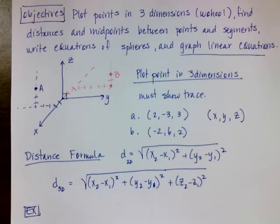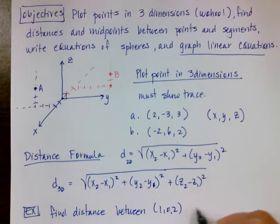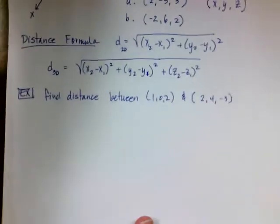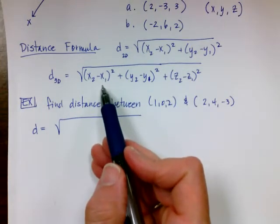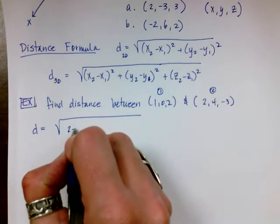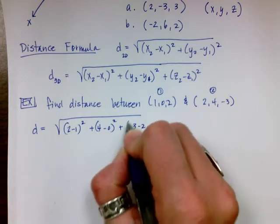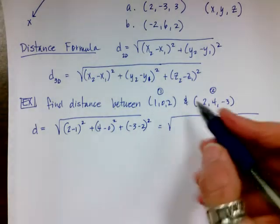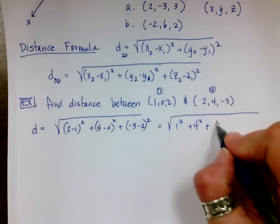Let's do an example — find the distance between (1, 0, 2) and (2, 4, −3). My distance equals the square root of (2 − 1)² + (4 − 0)² + (−3 − 2)². Simplifying: 2 minus 1 is 1 squared, 4 minus 0 is 4 squared, and negative 3 minus 2 is negative 5 squared. That gives me 1 + 16 + 25, which is the square root of 42.